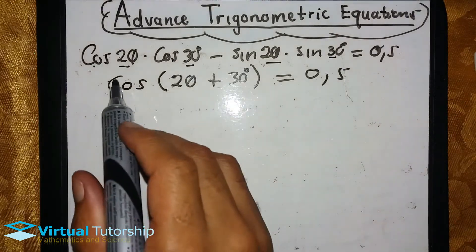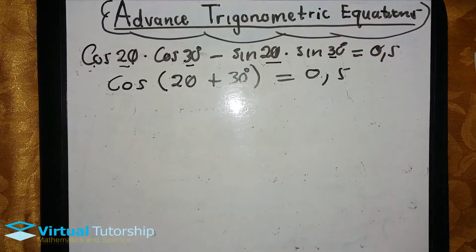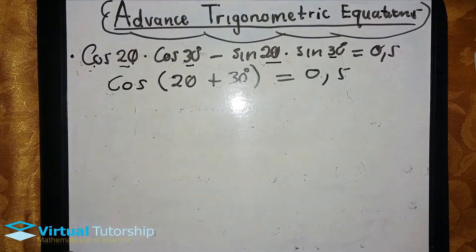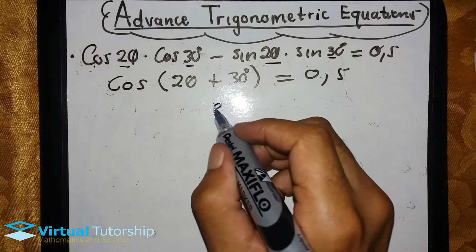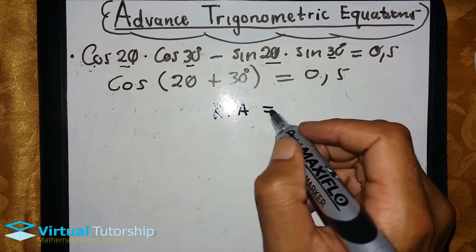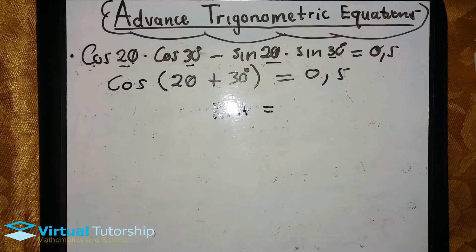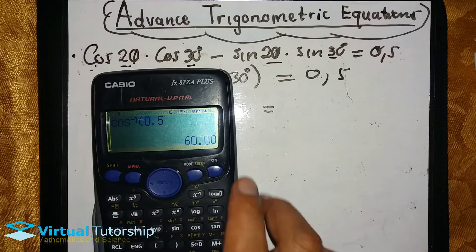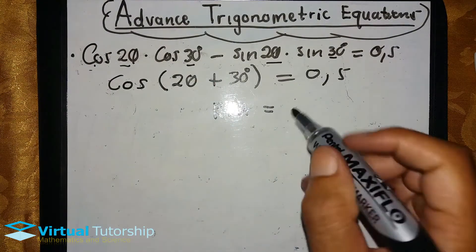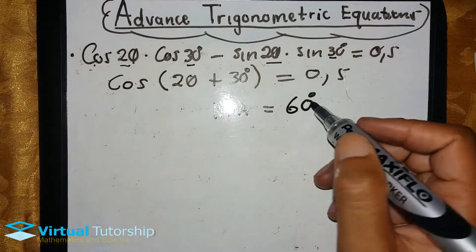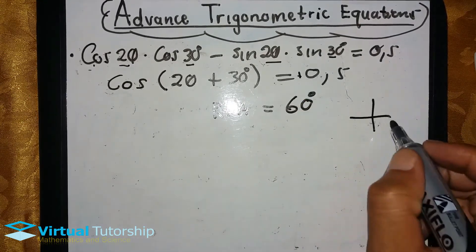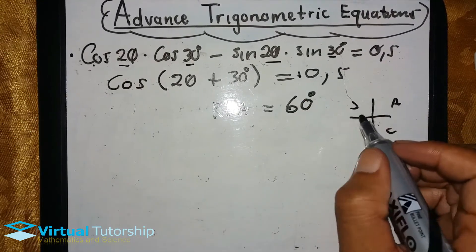With the compound angle reduced to a single trigonometric ratio, we find the reference angle: the inverse cosine of 0.5 is 60 degrees. Since cosine is positive, using the CAST rule, cosine is positive in the first and fourth quadrants.